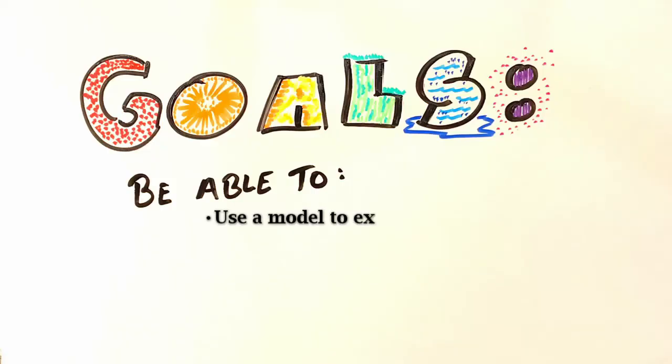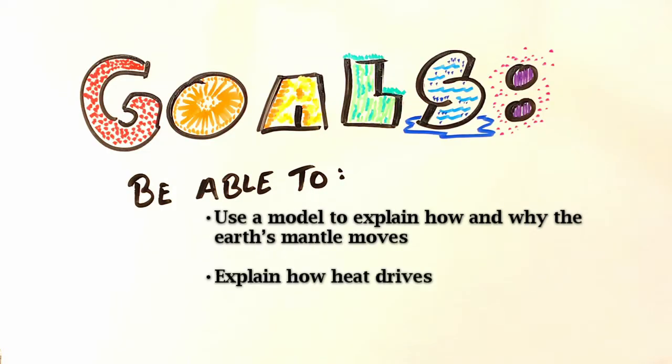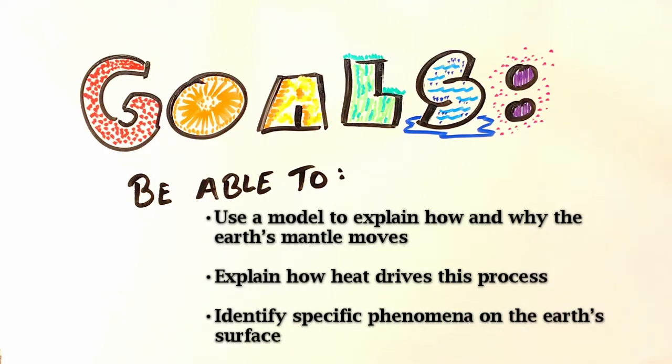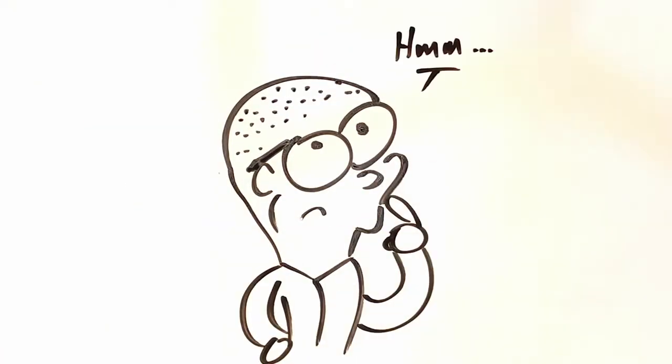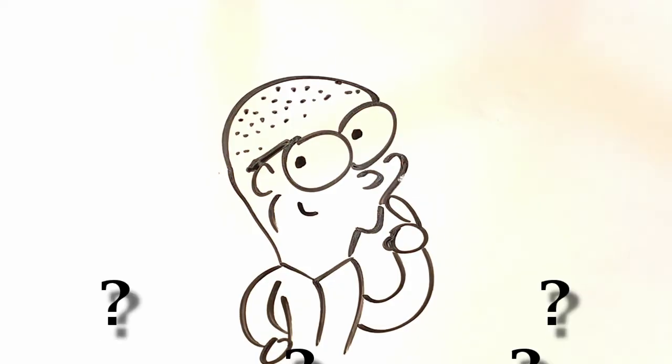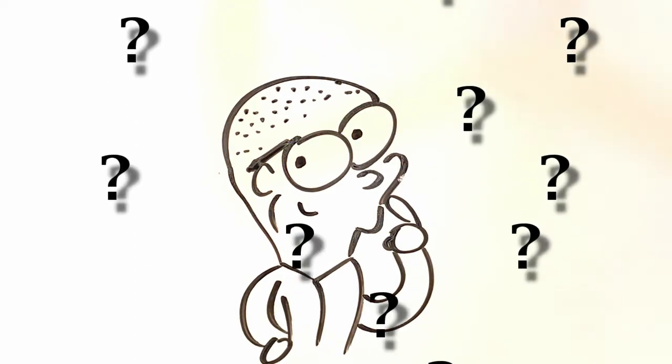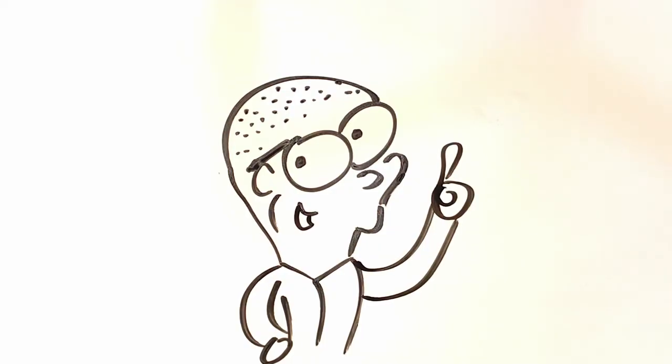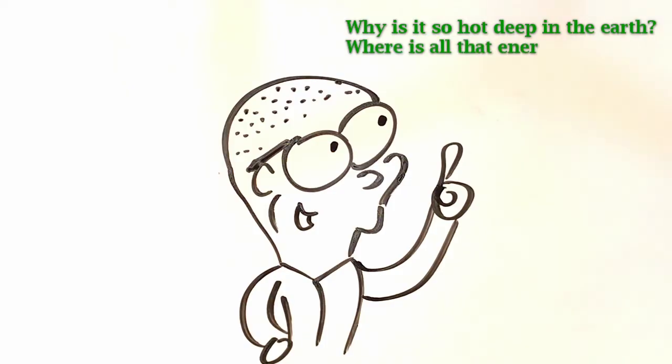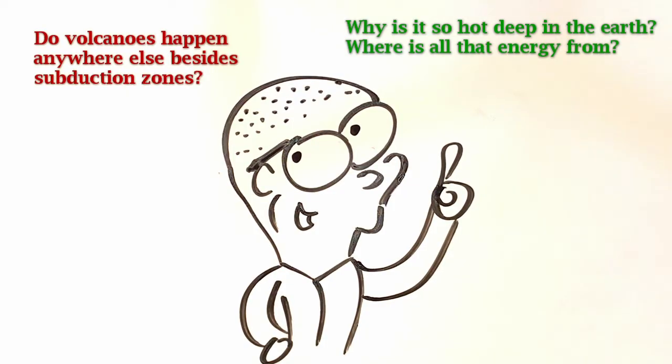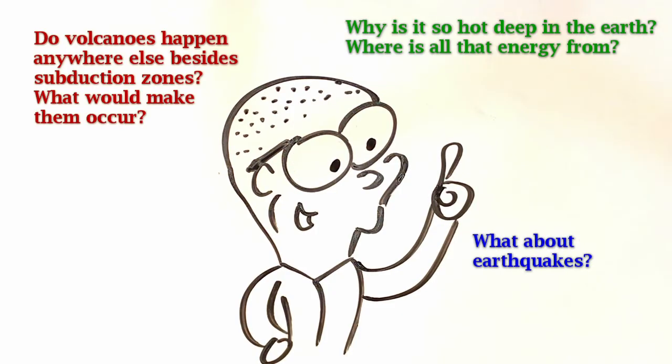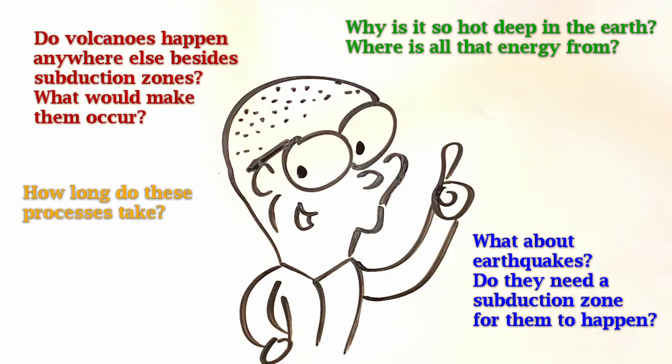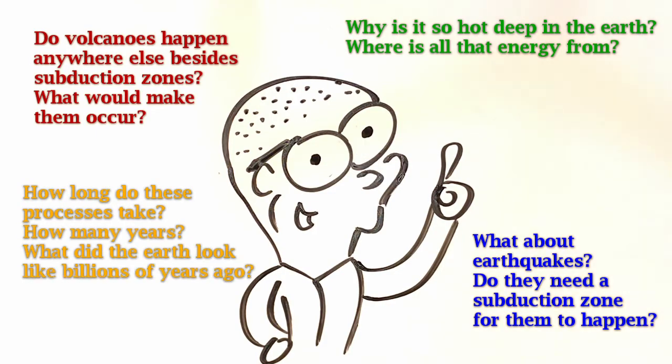So let's double check our goals and make sure we can do them all. You should be able to use a model to explain how and why the Earth's mantle moves, explain how heat drives this process, and identify specific phenomena on the Earth's surface that are caused by this process. But science isn't just about answers, it's also about questions. So what kind of questions can you come up with about this topic? We'll give you a few seconds to think about it. Here's a few questions that we came up with. Why is it so hot deep in the Earth? Where is all that energy from? Do volcanoes happen anywhere else besides subduction zones? What would make them occur? What about earthquakes? Do they need a subduction zone for them to happen? And how long do these processes take? How many years? And what did the Earth look like billions of years ago?